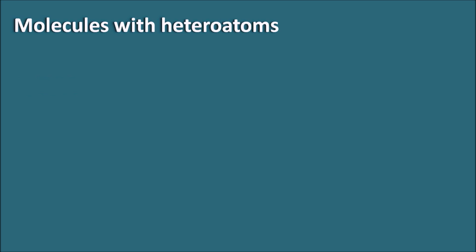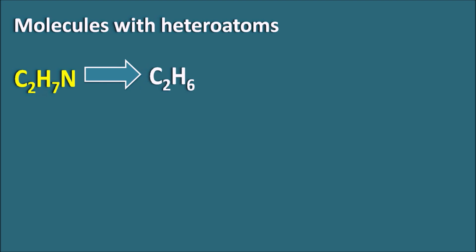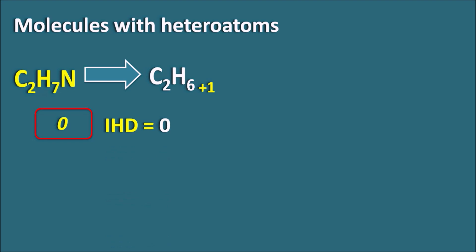So: whenever nitrogen is present, plus 1; halogens are present, minus 1; and oxygen is present, no change. Let us calculate the IHD value for the previous example C2H7N. The saturated molecular formula having 2 carbons is C2H6. But because nitrogen is present, we have to increase the number of hydrogens by plus 1, so it becomes C2H7. The difference between the hydrogens in the given sample and the saturated compound is 0, meaning the IHD value is 0 — which is easily observed using the corrected molecular formula.